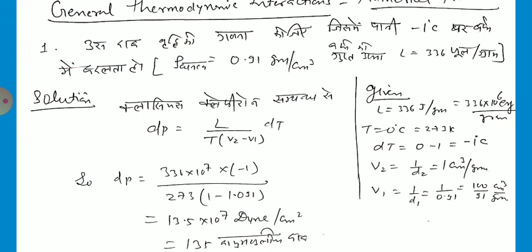So L is equal to 336 times 10 to the power 7, because 1 joule equals 10 to the power 7 ergs. This value is converted into CGS units. And T is equal to 0 degree Celsius, so T equals 273 Kelvin. And dT is minus 1.